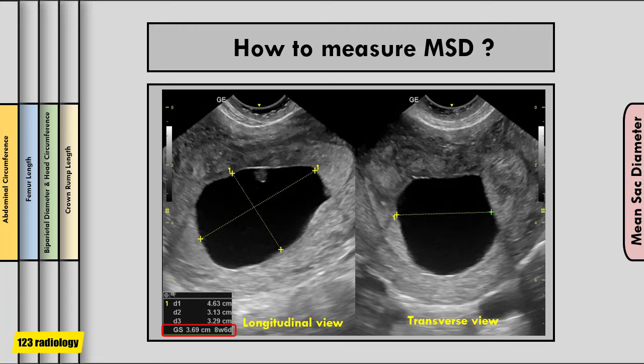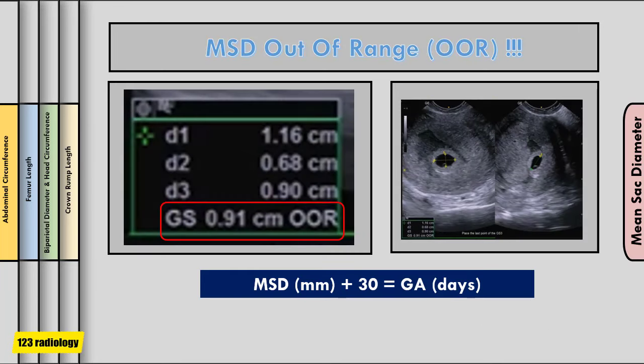Add the dimensions — length, width, and height — and divide by three to get the mean sac diameter. If your ultrasound machine shows that the mean sac diameter is out of range, use this formula: mean sac diameter in millimeters plus 30 equals gestational age in days. For example, if the mean sac diameter is nine millimeters, then nine plus 30 equals 39, which is the gestational age in days.